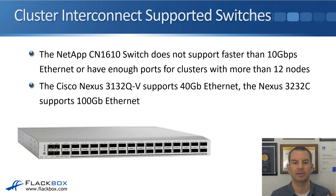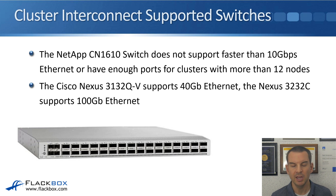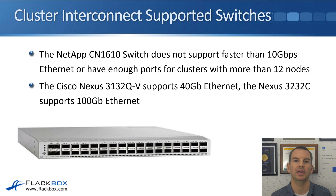The NetApp CN1610 does not support faster than 10 gigabit Ethernet and doesn't have enough ports for clusters with more than 12 nodes. In that case, you can use the Cisco Nexus 3132QV, which supports 40 gigabit Ethernet, or the Nexus 3232C, which supports 100 gigabit Ethernet. If you have newer controller models with faster Ethernet connections, or more than 12 nodes, you'll be using a Cisco switch.